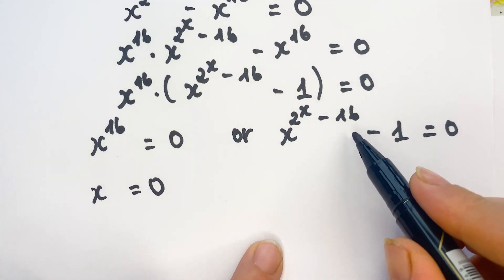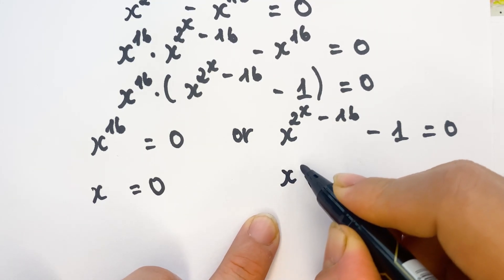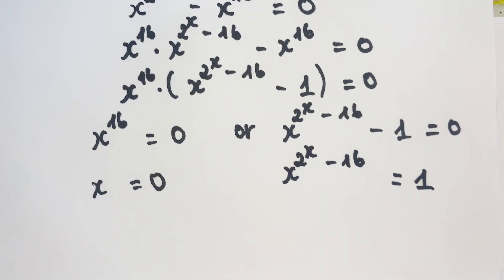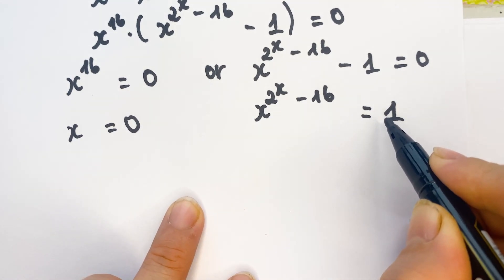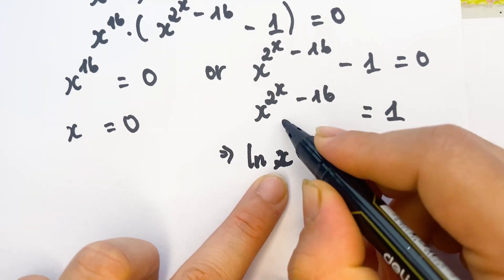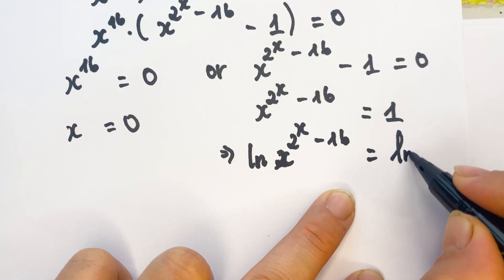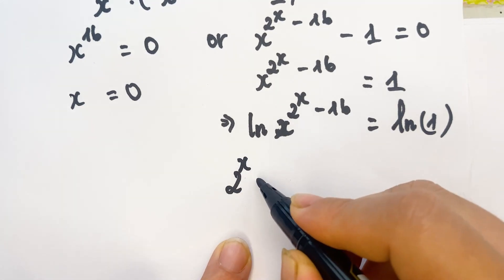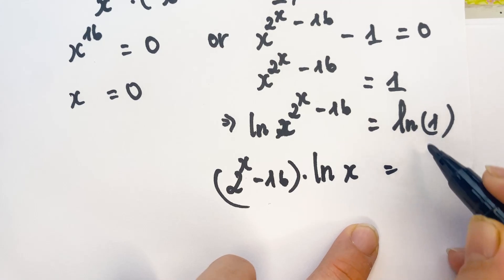Now for the second equation: x^(2^x - 16) equals 1. For the next step, we take the natural log of both sides. So we get the natural log of x^(2^x - 16) equals the natural log of 1. This gives us (2^x - 16) times the natural log of x equals 0.